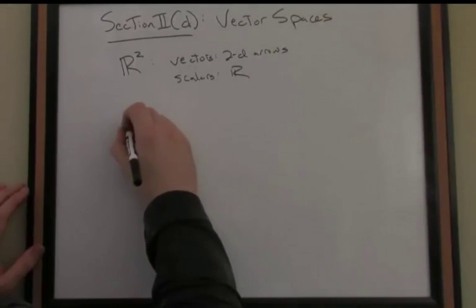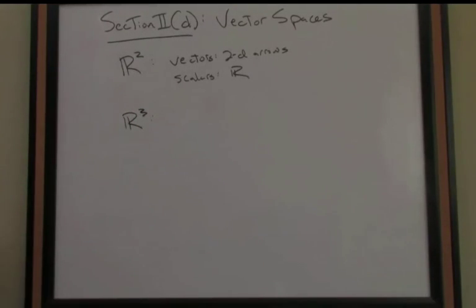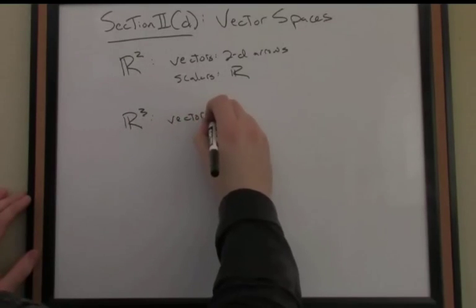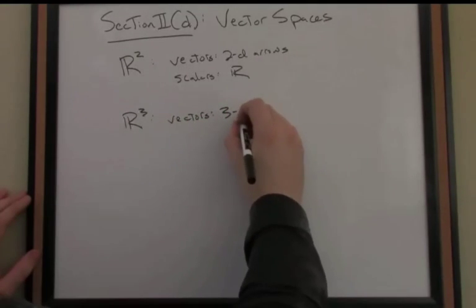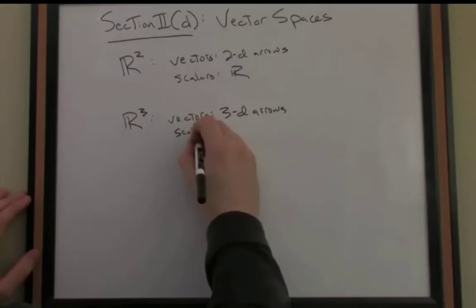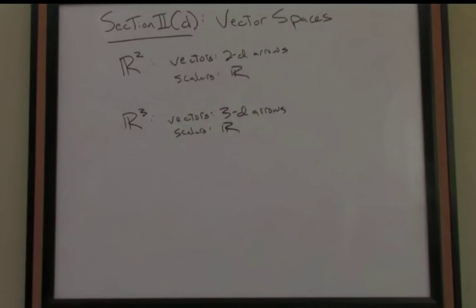Similarly, R3 is also a vector space. In this case, it's a three-dimensional vector space. We just extend by one dimension. Our vectors consist of three-dimensional arrows in three-space, and our scalars, once again, that scalar set is by convention going to be the set of all reals.